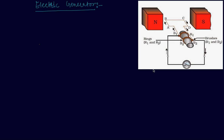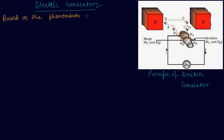This is how the setup is shown for the principle of electric generator. Based on the phenomenon of electromagnetic induction that we have discussed in a previous class, the experiments studied above can generate induced current, which is usually very small.